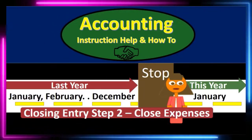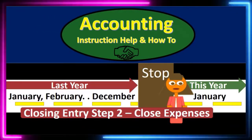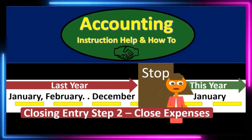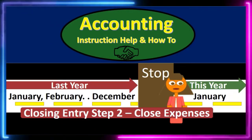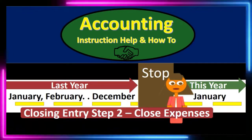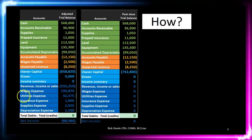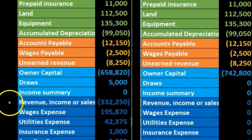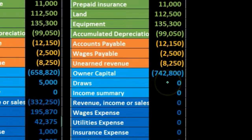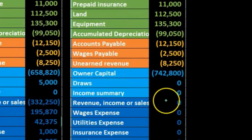In this lecture we're going to talk about the closing process — step two of the four-step process, which is closing the expense accounts to the income summary. Remember that the goal of the closing process is to close out the temporary accounts: the draws as well as all the income statement accounts including revenue and expenses to the capital account. So we want our adjusted trial balance to look like the post-closing trial balance with all these zeros from the capital account down.